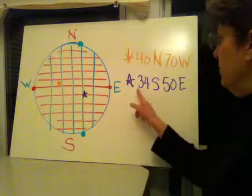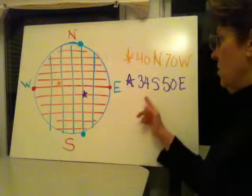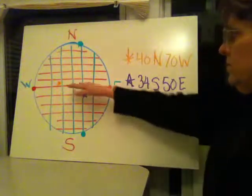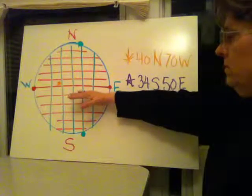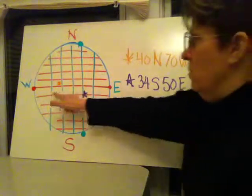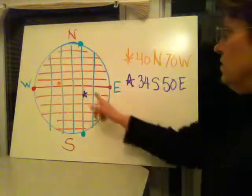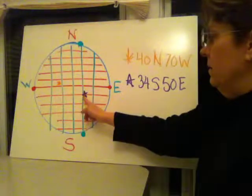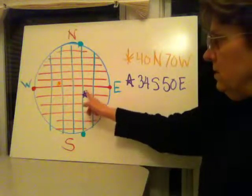Second example, I have 34 south and 50 east. I'm thinking south, I need to go south of the equator. So 10, 20, 30, say around here, maybe 34 is anywhere along the line here. However, I have 50 east. I have to find that prime meridian and go 50 degrees east. So this location would be approximately somewhere here.